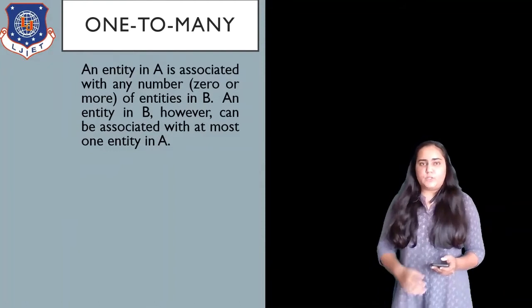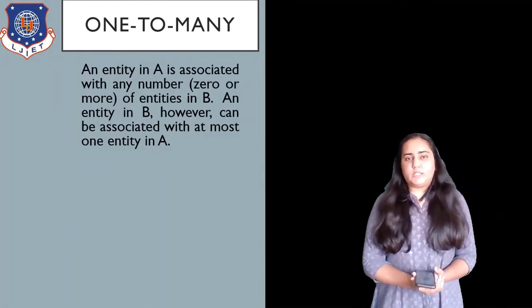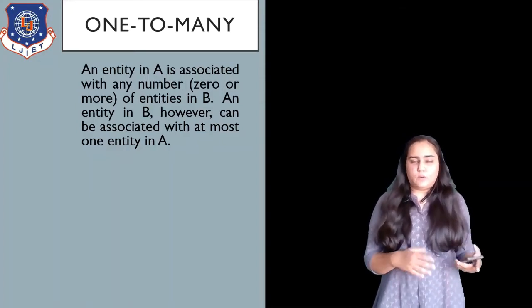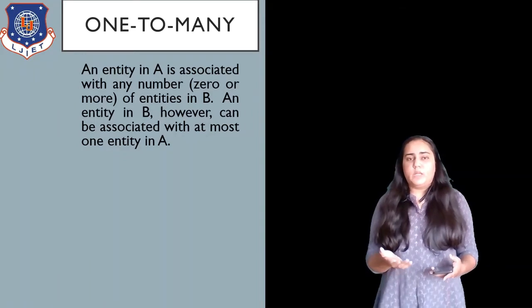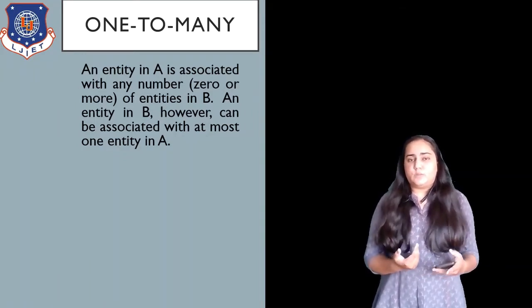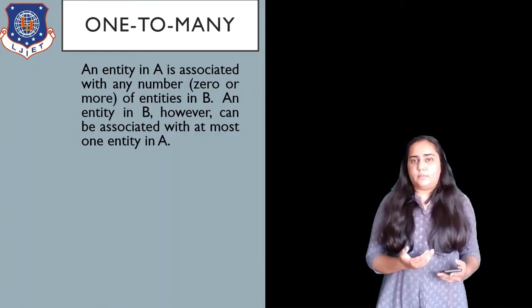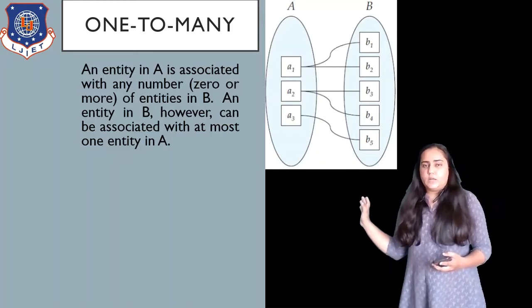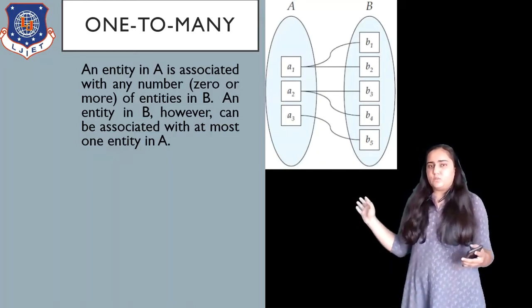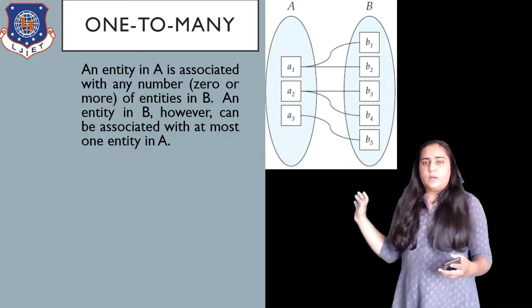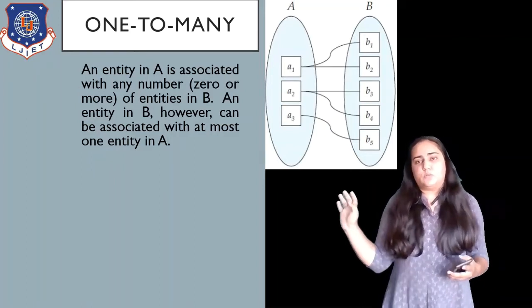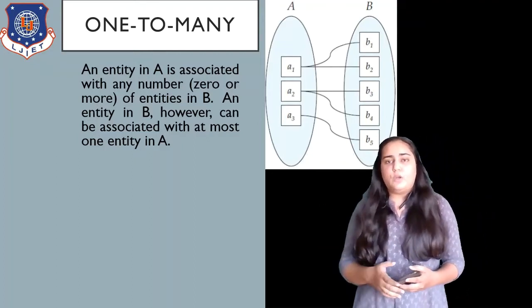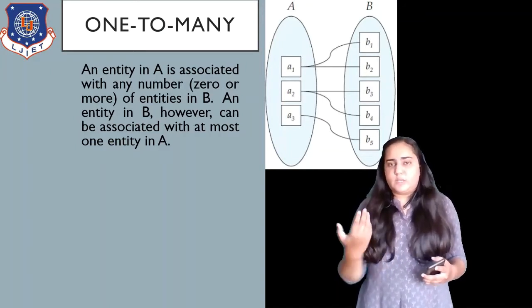Next, we have a one-to-many relationship. This is where an entity in set A is associated with any number — zero or more — entities in B, but an entity in B will be associated with at most one entity in A. In this diagram, each entity from A is associated with multiple entities in B. For example, A1 is associated with B1 and B2, and A2 is associated with B3 and B4.